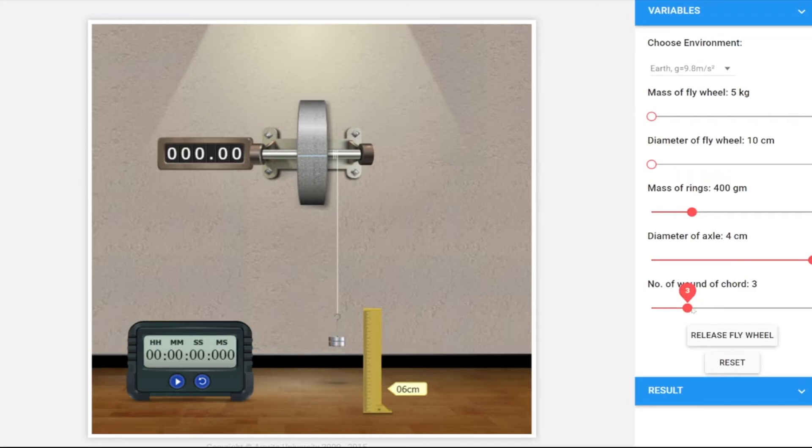Let's keep the diameter at 2, so the radius will be 2. The mass is 400. Let's release. We'll wait till it stops. It is going to take longer because we have increased the mass and also the number of rounds, which will increase the potential energy. So it will take a longer time to get to rest, and the number of revolutions will be more than the last readings.